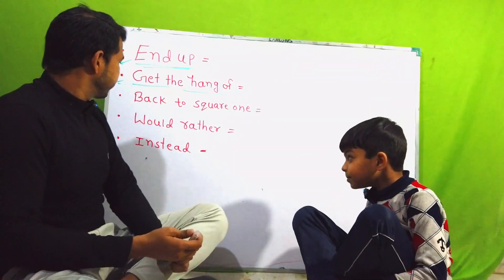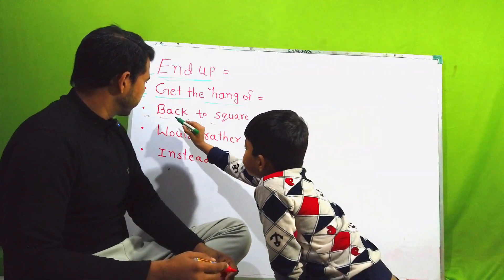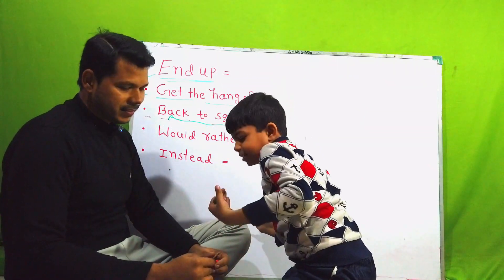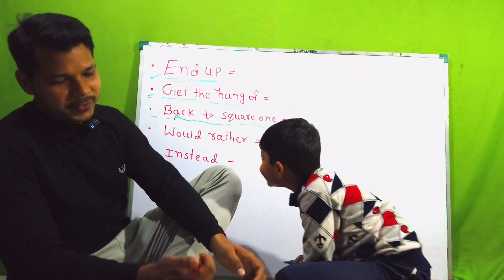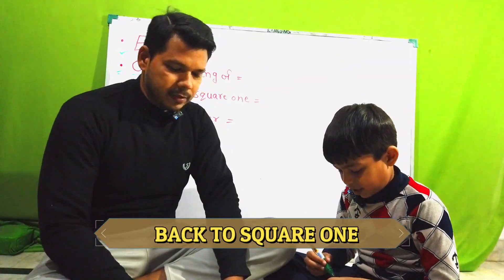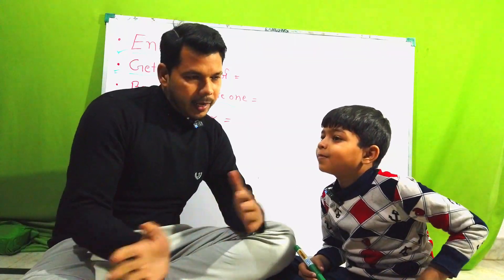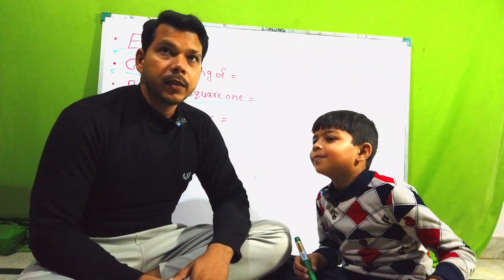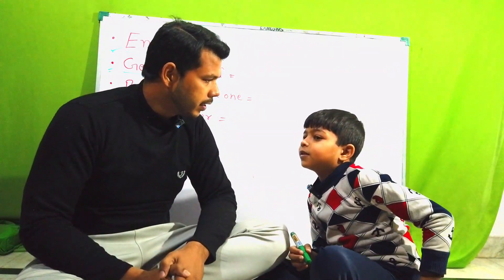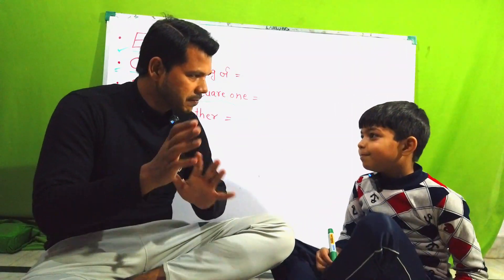Now the next structure is 'back to square one'. What does 'back to square one' mean? Suppose I am cleaning my room and I have cleaned almost half of it. Suddenly wind started blowing and a lot of leaves came inside. Oh my god — now I came back to square one. I will again have to clean it. You got that?